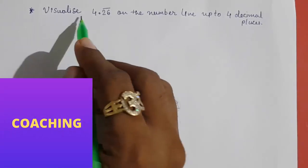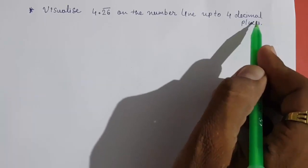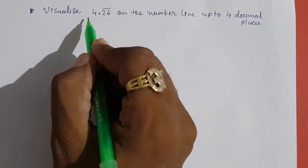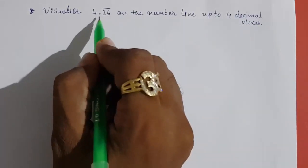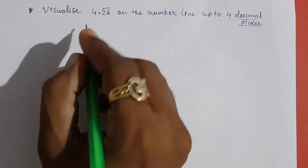Hello friends, today we are going to visualize 4.26 bar on the number line up to 4 decimal places, or you can say magnify and represent 4.26 bar on the number line. They said up to 4 decimal places.